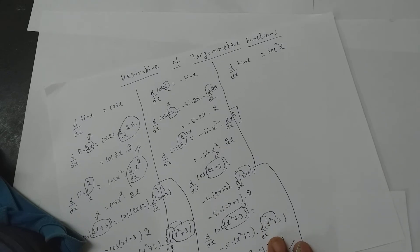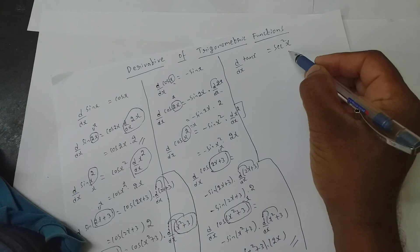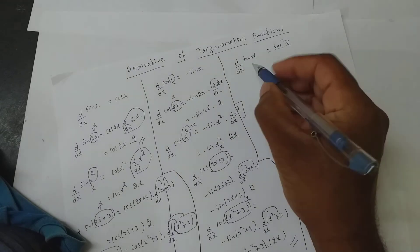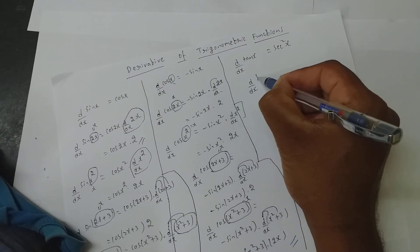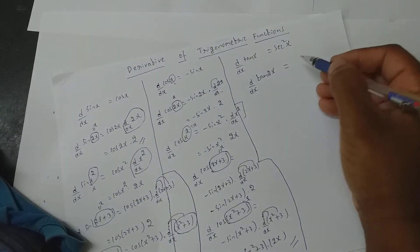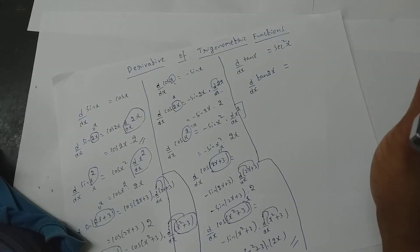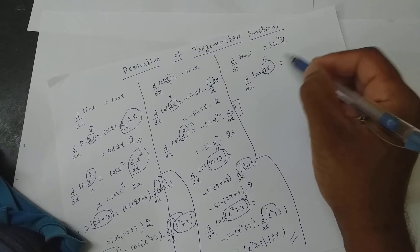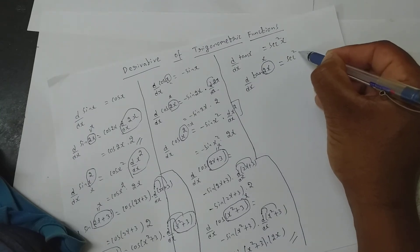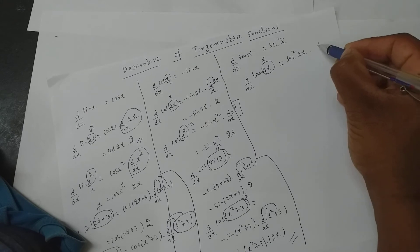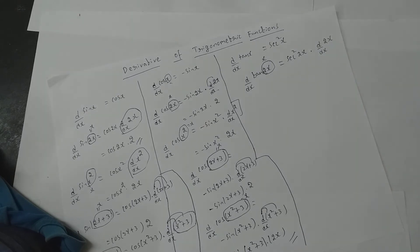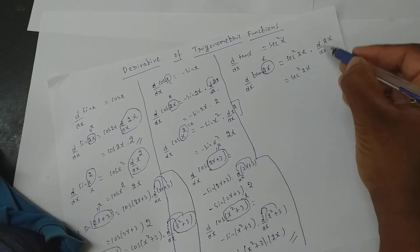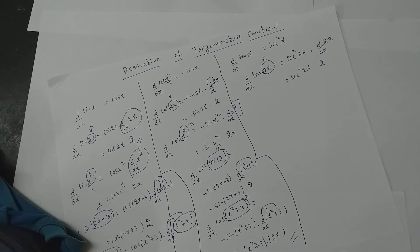Now let us see one more: d/dx of tan x is secant square. The first line is easy. The problem comes when it is d/dx of tan 2x — don't panic. You will assume 2x to be x. Tan x is secant square, so it becomes secant square 2x into d/dx of your assumption. So it is secant square 2x into 2.